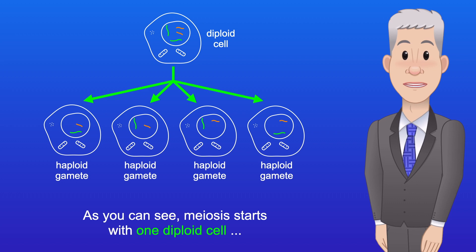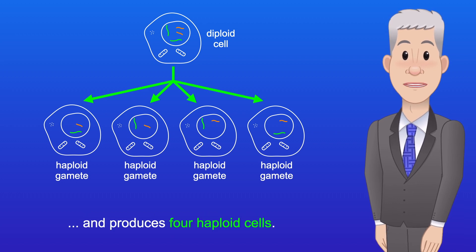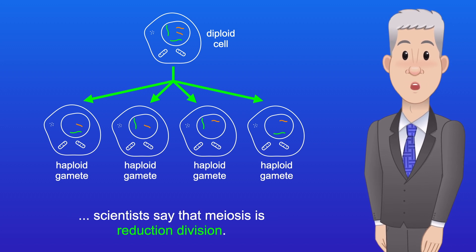So as you can see, meiosis starts with one diploid cell and produces four haploid cells. Because the chromosome number halves, scientists say that meiosis is reduction division.